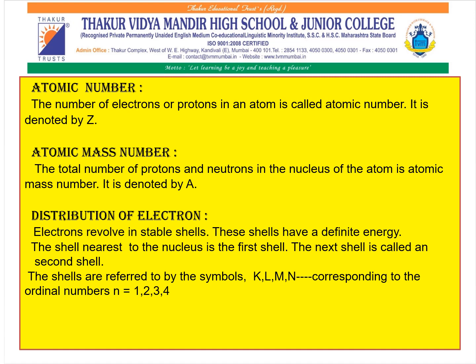Electrons revolve in specific orbits around the nucleus. These shells or orbits have definite energy. The shell closest to the nucleus is the first shell, and the next is the second shell. There are four shells referred to by the symbols K, L, M, and N, corresponding to the ordinal numbers 1, 2, 3, and 4.